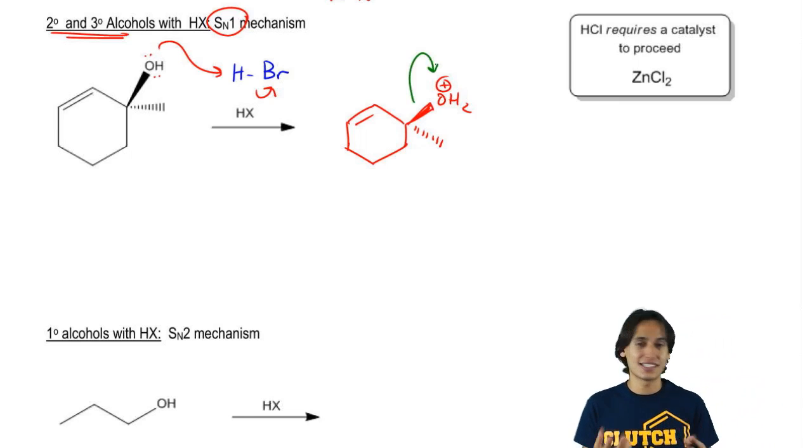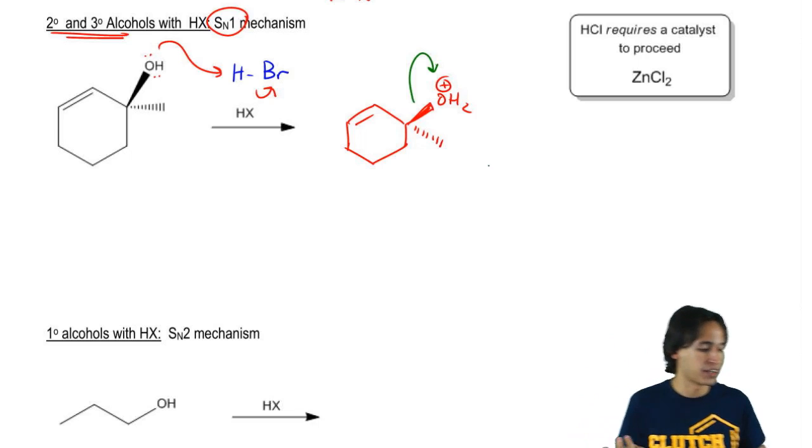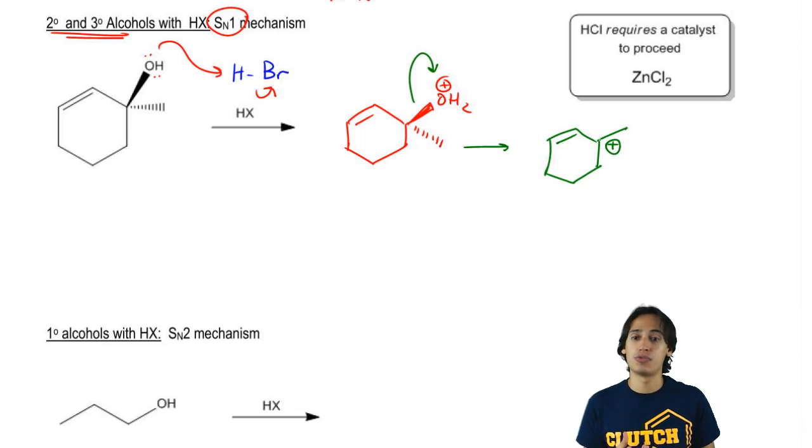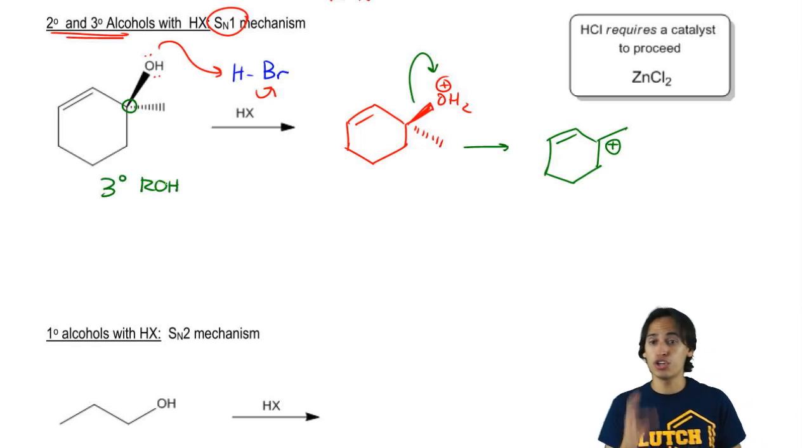Why? Because this is an SN1 reaction. Remember that in an SN1 reaction, you need to make a carbocation. So what we're going to do now is we're just going to draw out our carbocation. And the reason that we knew that it would make a carbocation is because if you'll notice, I started off with a tertiary alcohol. Remember that I told you tertiaries and secondaries are going to do SN1.